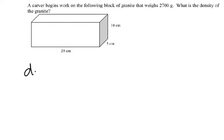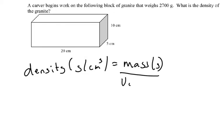So remember density, which has the units grams per centimetre cubed, is equal to mass in grams divided by volume, which is centimetres cubed.